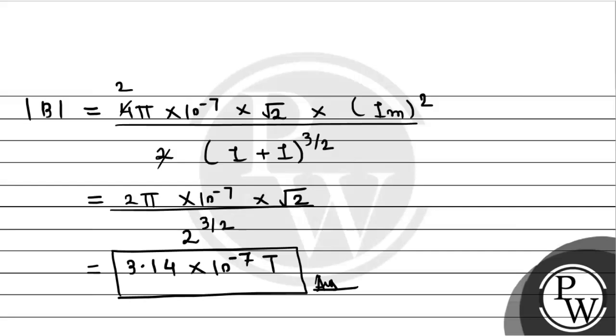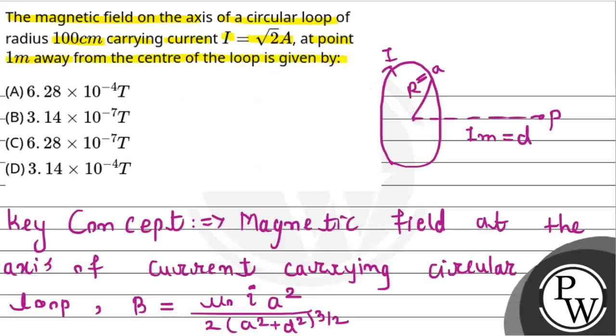Now according to the given options, 3.14 times 10 to the power minus 7, option B is going to be correct. So this is the required solution. I hope you understand well. Best of luck, thank you.